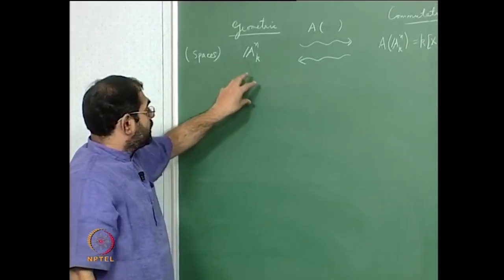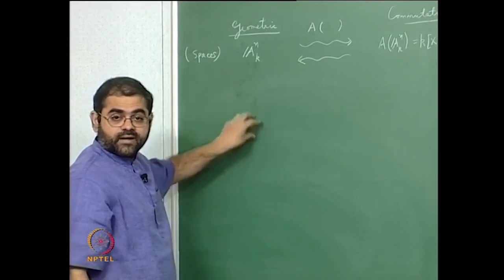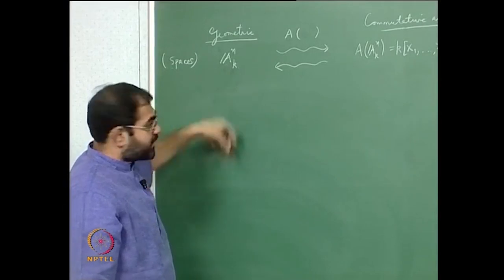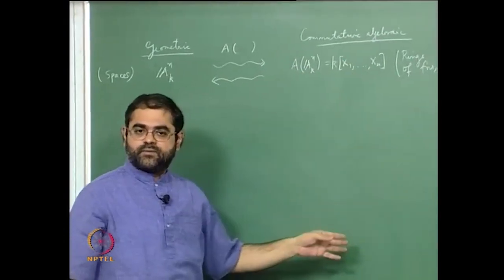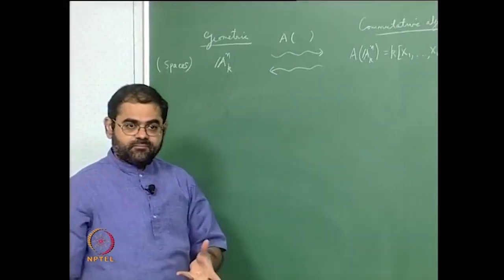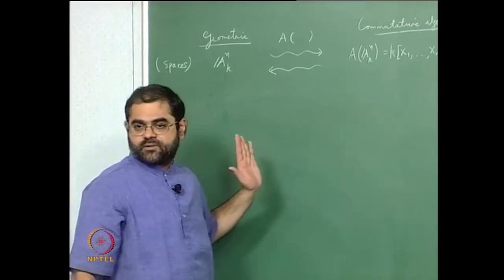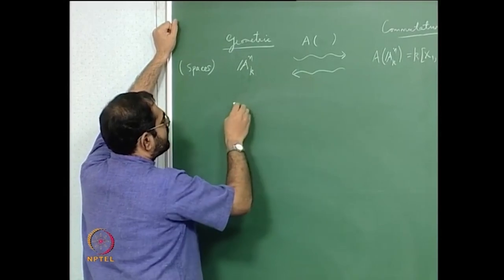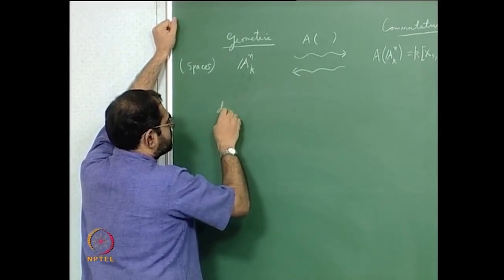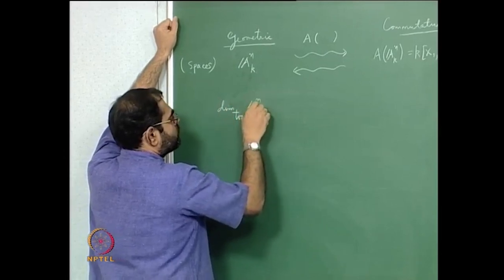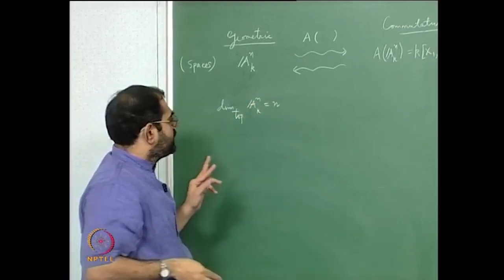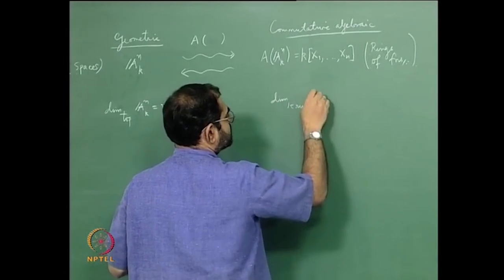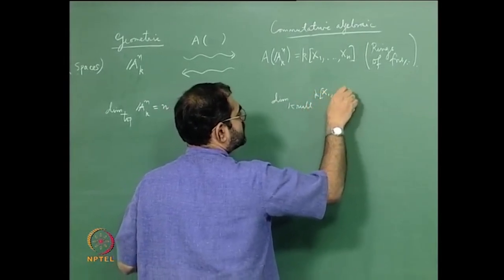Now rather than going from algebraic sets or varieties to ideals, what you do is go from algebraic sets or varieties to rings of functions. That is the change in point of view. And the fact is that again you get a nice bijective correspondence. What I want to say is that if I take the topological dimension of A^n, this is of course n, and that is just a translation of the fact that the Krull dimension of the polynomial ring is n.